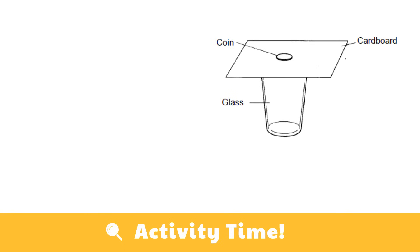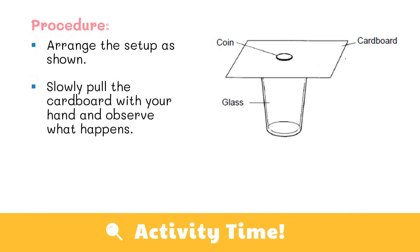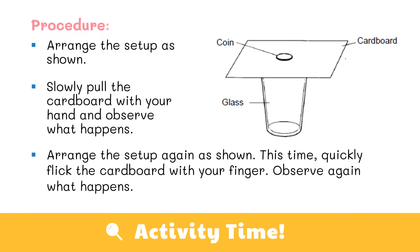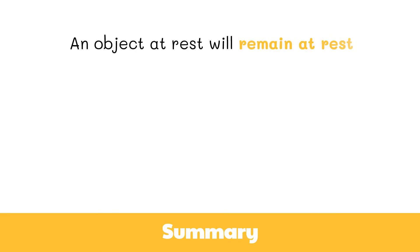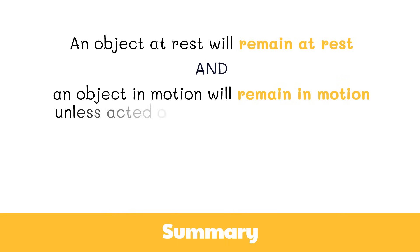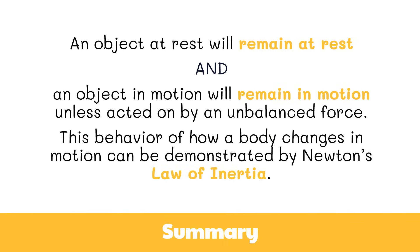Let's do a short activity to apply what we've learned. Get a coin, a glass, and a piece of cardboard. Arrange the setup as shown, then slowly pull the cardboard with your hand and observe what happens. Arrange the setup again, and this time quickly flick the cardboard with your finger and observe again. What happened to the coin when you slowly pulled the cardboard? How about when you quickly flicked it? An object at rest will remain at rest, and an object in motion will remain in motion unless acted on by an unbalanced force — this is Newton's law of inertia, or the first law of motion.